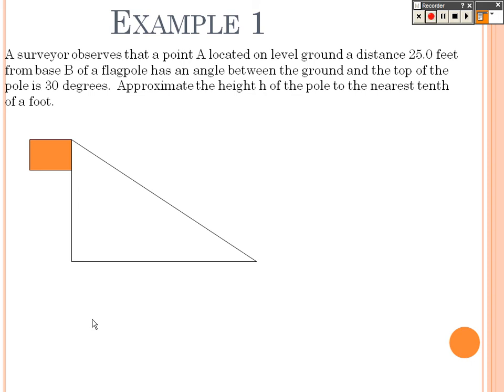So, a surveyor observes that a point A located on level ground a distance of 25 feet away from base B of a flagpole has an angle between the ground and the top of the pole of 30 degrees. Approximate the height of the pole to the nearest tenth. So how does this all work? This is where trig comes into play. You need to see what sides are being used. First of all,